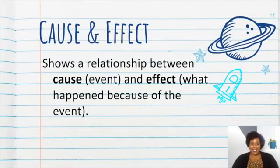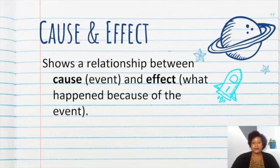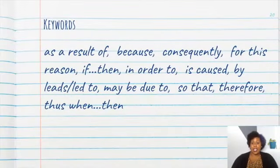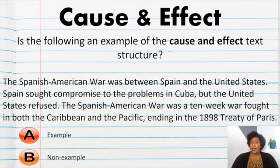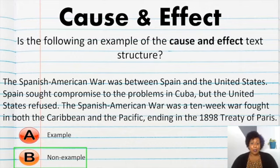All right. Cause and effects. This shows a relationship between cause, the events, and effects, what happened because of the events. Now, these are the keywords that will support you understanding a cause and effect relationship. Let's read this to determine whether or not this is a cause and effect text structure. The Spanish-American War was between Spain and the United States. Spain sought compromise to the problems in Cuba, but the United States refused. The Spanish-American War was a 10-week war fought in both the Caribbean and the Pacific ending in the 1898 Treaty of Paris. Hmm. Is this an example of cause and effect text structure? If you said this was a non-example, you were right.